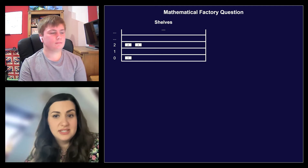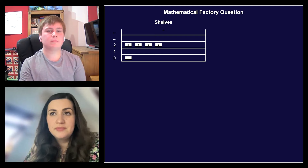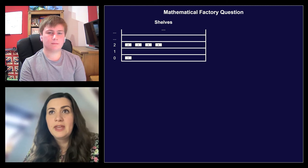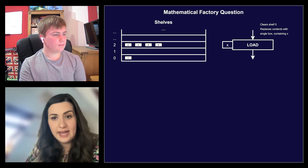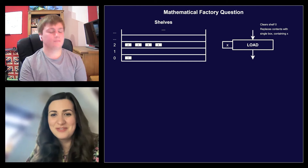An example of a valid configuration would be to have on shelf zero a box labeled with integer one. Shelf one could be empty. And we could have on shelf two boxes with integers two, three, five, and zero. Your job is going to be to write flowcharts for a robot worker in order to process the contents of the shelves and create new boxes with new numbers in them. And these numbers will need to satisfy certain properties. Feel free to ask me to repeat anything if it's not clear.